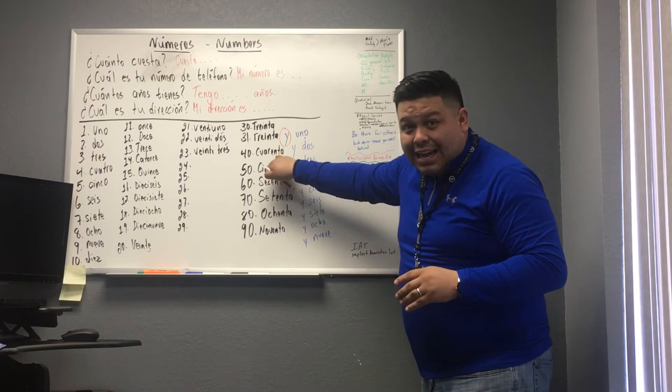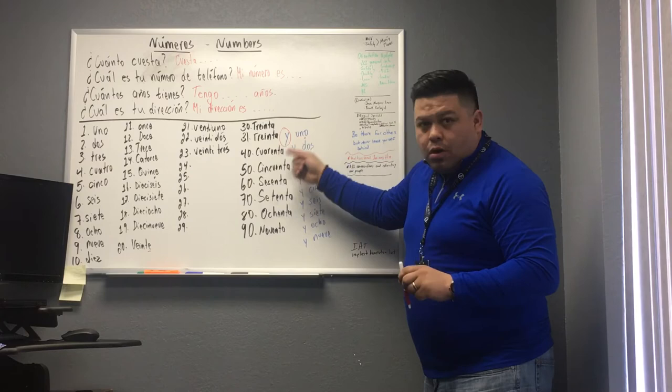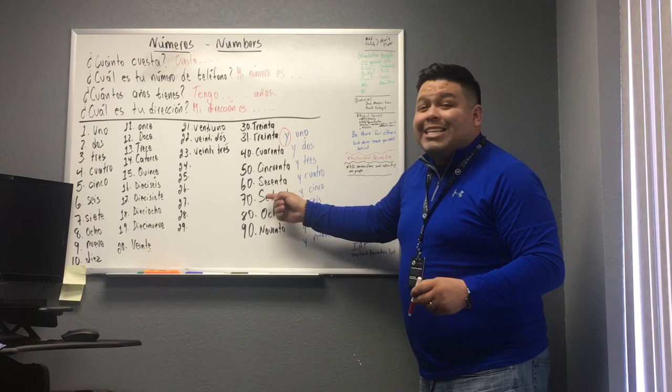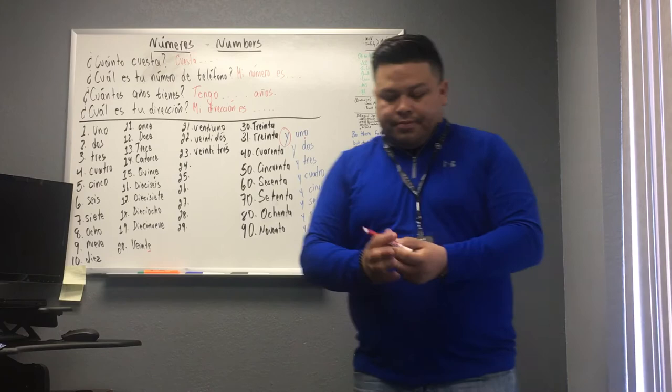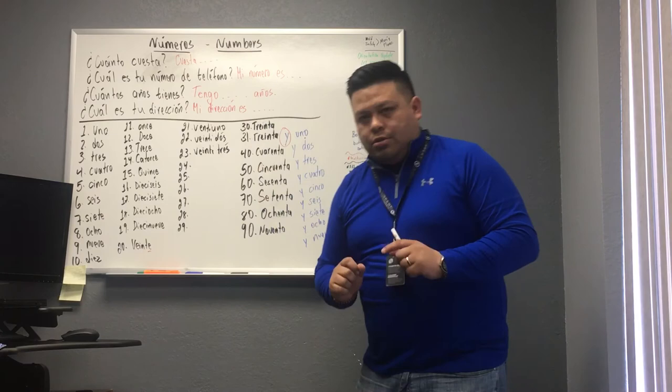Cuarenta. And then we repeat the same process: cuarenta y uno, and vice versa. Cincuenta y dos. Sesenta y tres. Setenta y cuatro. Ochenta y cinco. Noventa y seis, and so on.